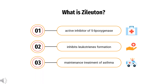What is Zileuton? What class of drug is Zileuton? Zileuton is an orally active inhibitor of 5-lipoxygenase, and thus inhibits leukotriene formation, used for the maintenance treatment of asthma. Zileuton was introduced in 1996 by Abbott Laboratories and is now marketed in two formulations by Cornerstone Therapeutics Inc. under the brand names Zyflo and Zyflo-CR.